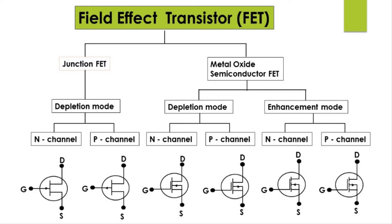In both JFET and MOSFET, devices are again classified based on the mode of operation as depletion mode and enhancement mode. JFET operates only in depletion mode, but MOSFET operates in both depletion mode and enhancement mode. In depletion mode, the channel is permanently fabricated by doping at the time of construction itself. In enhancement mode, the channel does not exist initially and it is induced at the gate terminal.